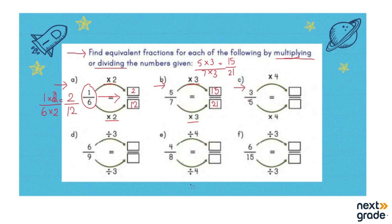Let's look at part C, where we have to multiply the denominator and numerator both with number 4. Rough work: 3 multiplied by 4 is 12, and 5 multiplied by 4 is 20. So the answer is 12 over 20. Now we know that 3 over 5 has an equivalent fraction of 12 over 20.